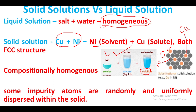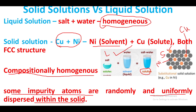Both copper and nickel have FCC structure. This solid solution is compositionally homogeneous — fully homogeneous, 100% homogeneous. Some impurity atoms are randomly and uniformly dispersed within the solid during the making process.